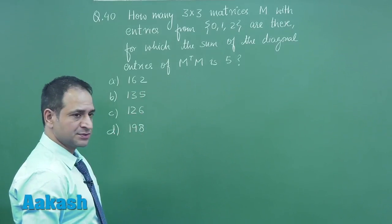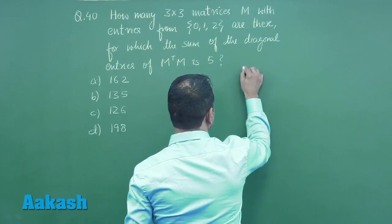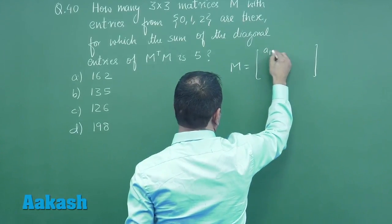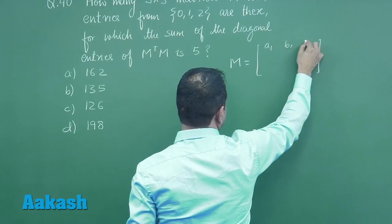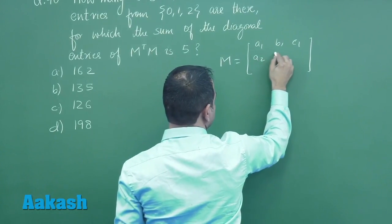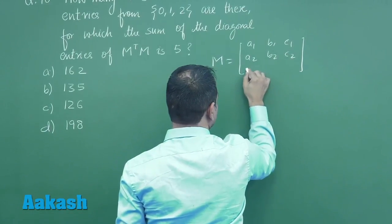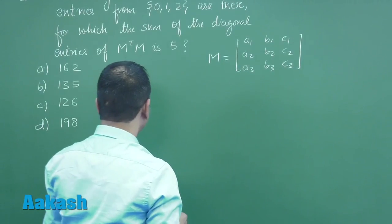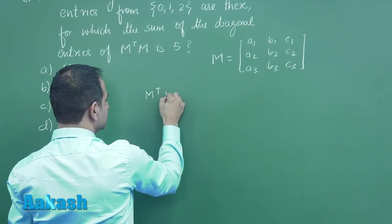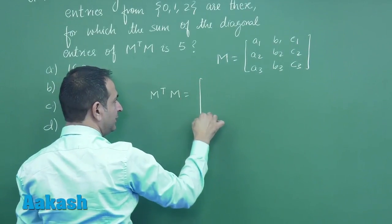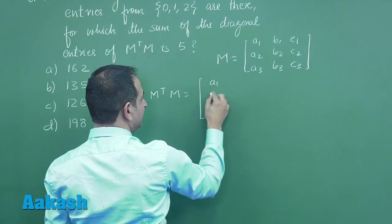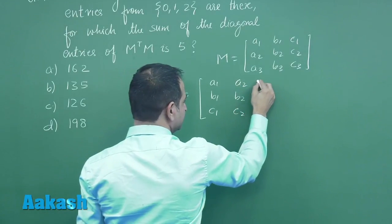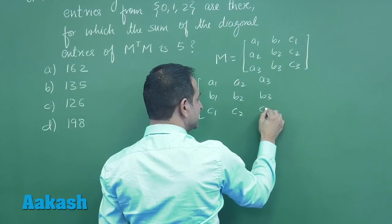These are the given options. Now let us assume M, a third order matrix: A1, B1, C1, A2, B2, C2, and A3, B3, C3. Now what is the product of M transpose into M? Here we have M transpose, that is A1, B1, C1 and A2, B2, C2, A3, B3, C3.